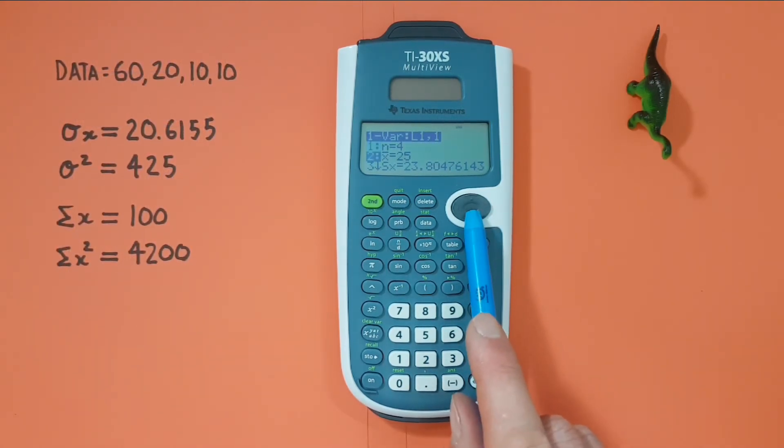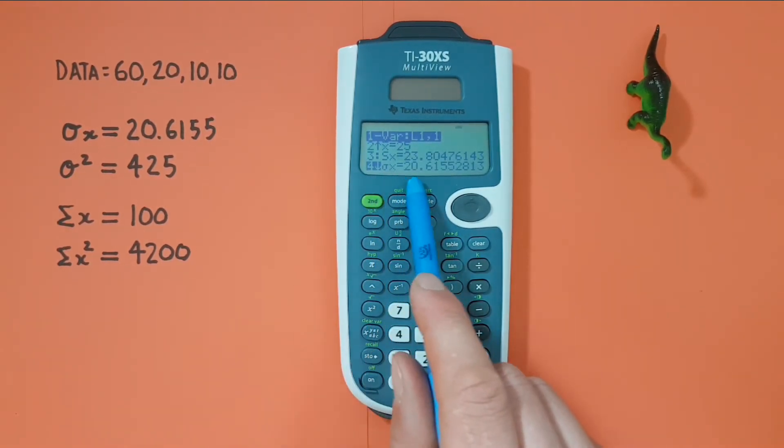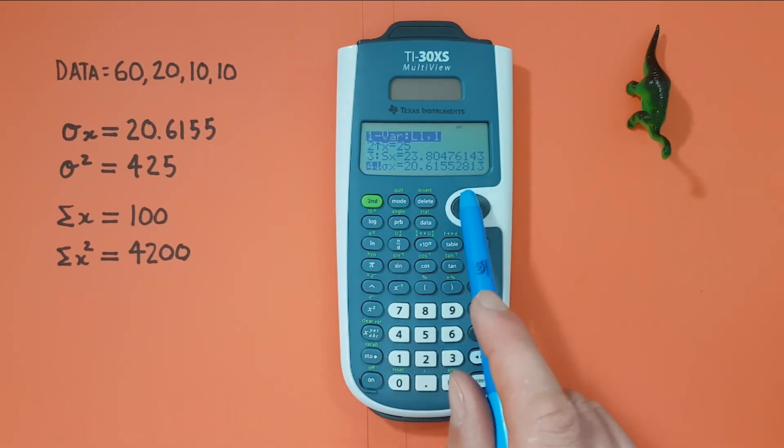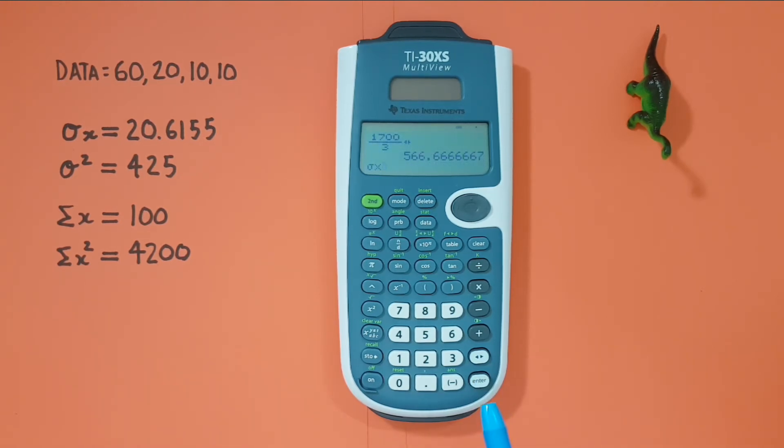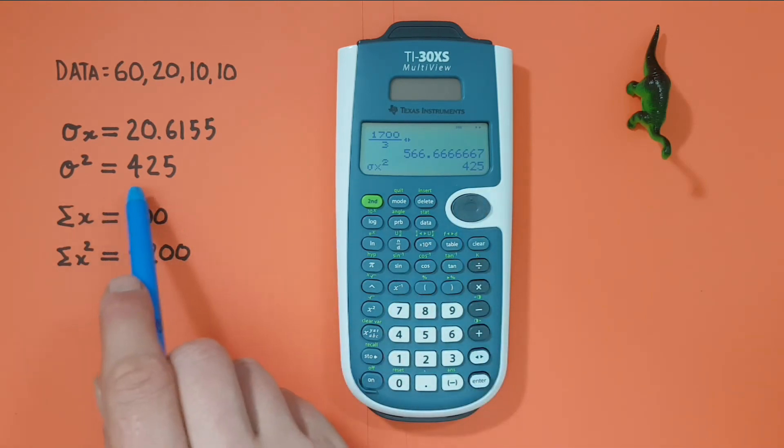And if we continue scrolling, we see we get our population standard deviation of 20.6155 etc. And again if we want to get our population variance, all we have to do is select that, press enter, and square it once it's on our screen. And we get a population variance of 425.